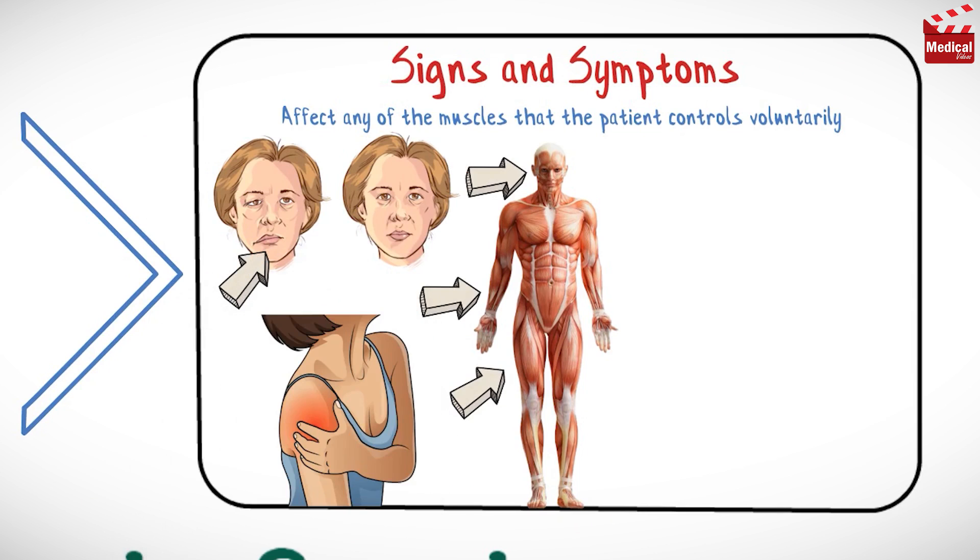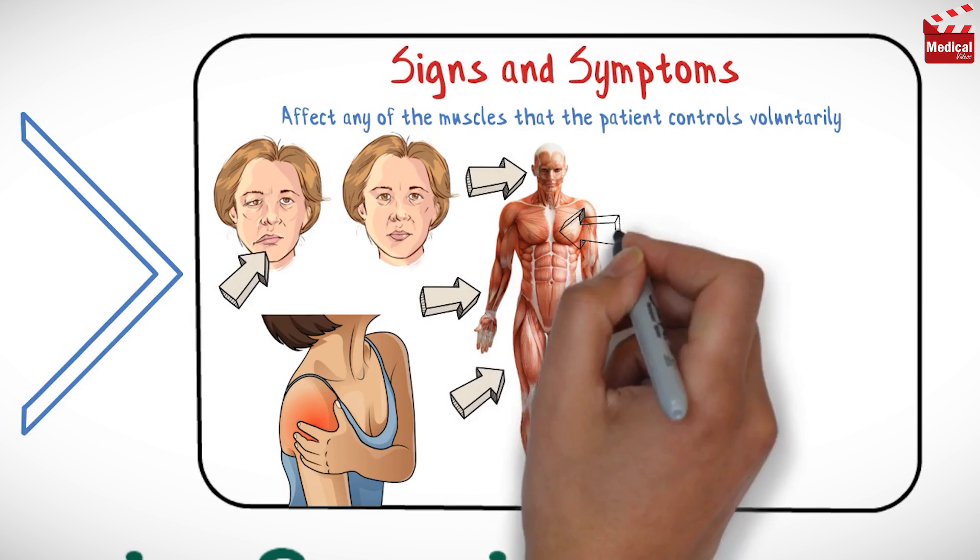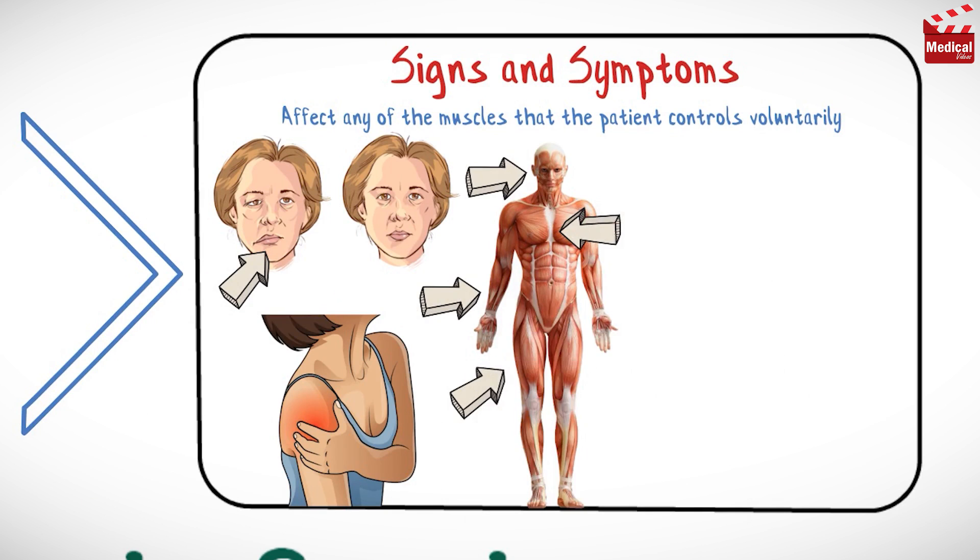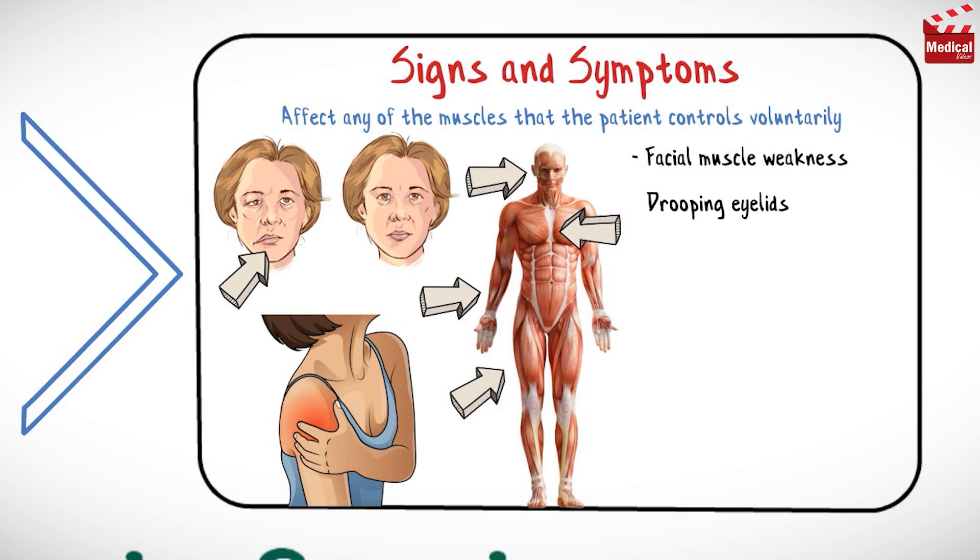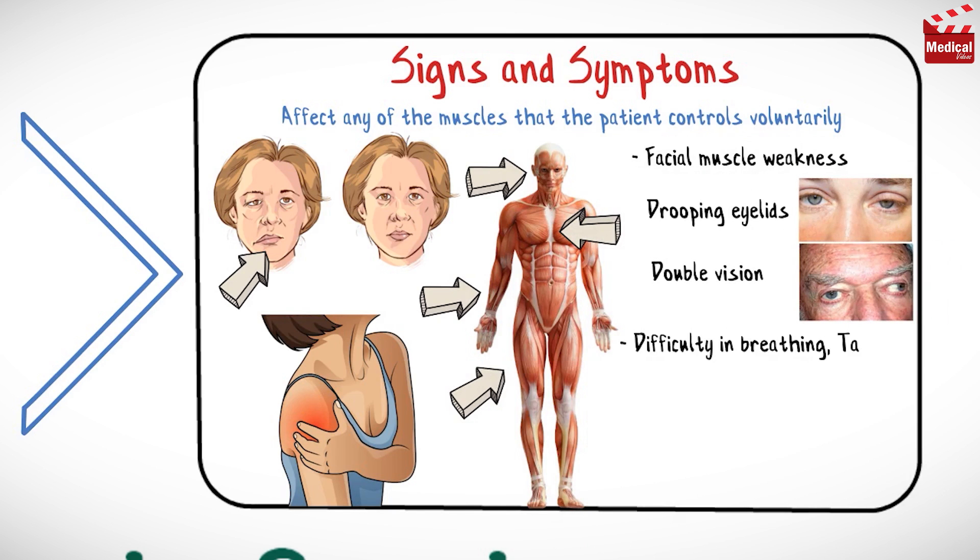Muscles that control breathing also can be involved. Signs and symptoms may include facial muscle weakness including drooping eyelids and double vision, difficulty in breathing, talking, chewing or swallowing, muscle weakness in arms or legs, and fatigue that is caused by repetitive movements.